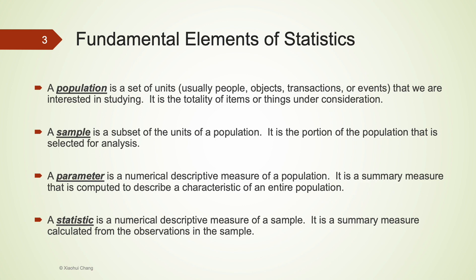In comparison to population, which is the totality of items under consideration, a sample is a subset of the units of a population. Sample is usually smaller than population. Statistic is the numerical descriptive measure of a sample — statistic for sample, and parameter for population.